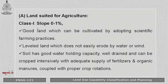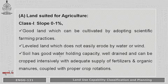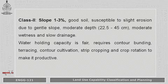Now we will classify the land capability groups from class 1 to class 8 in detail. Class 1 has a slope varying from 0 to 1 percent. This land is good for cultivation by adopting different farming or agronomical practices. It is level land which does not easily erode by water. The soil has good water holding capacity, is well drained, and can be cropped intensively with adequate supply of fertilizers and organic matter.